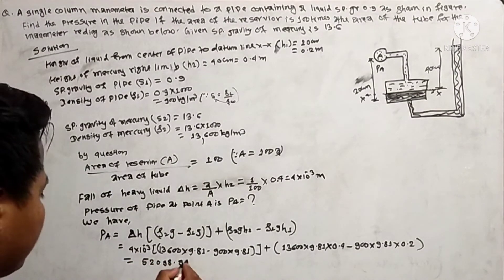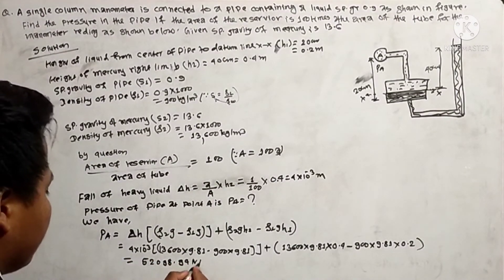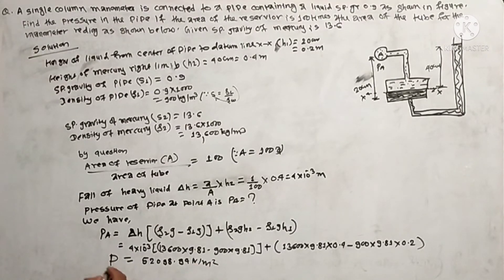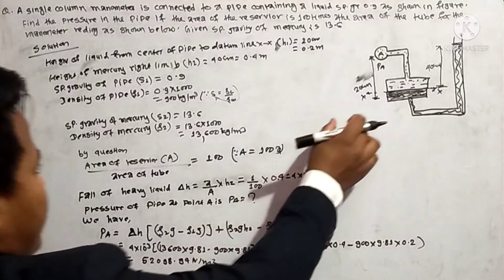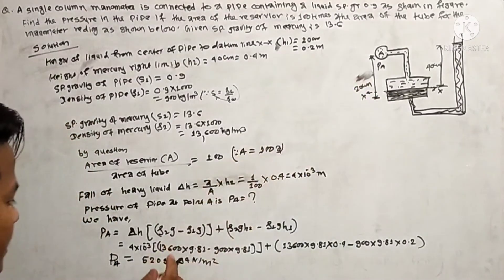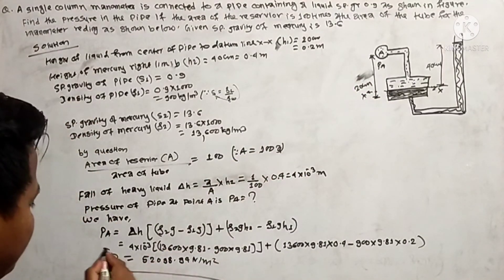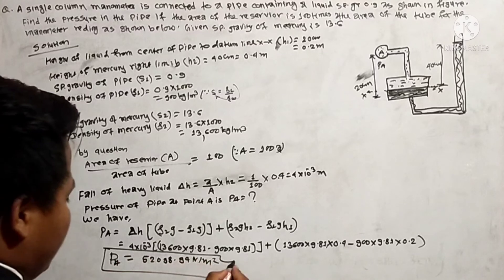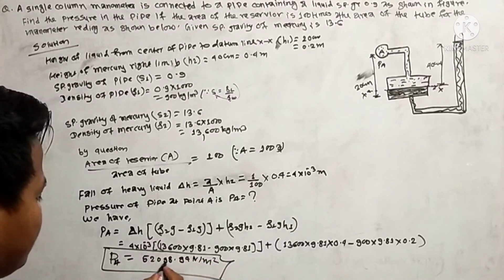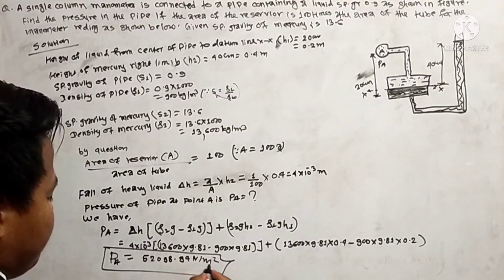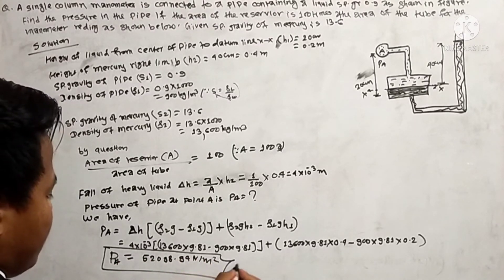The result is 52,098.94 Newton per meter squared. Therefore, the pressure of the pipe is 52,098.94 Newton per meter squared.